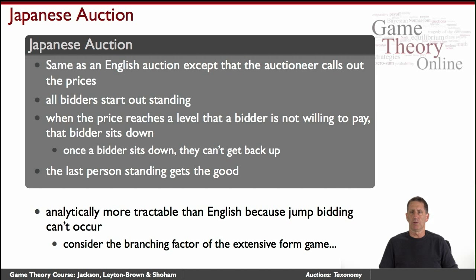This is very similar to the English auction, but a little easier to analyze, among other things, because the price rises continuously and you don't have what you call a jump bid, where somebody suddenly offers a price much higher than the current price. In terms of game representation, in the English auction at every point you have many branches corresponding to different increases or jump bids one could give, whereas in the Japanese auction the game evolves in a single predictable way.